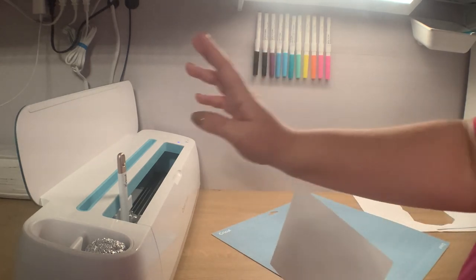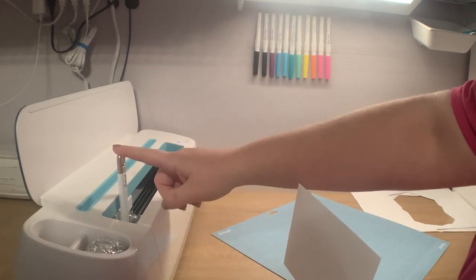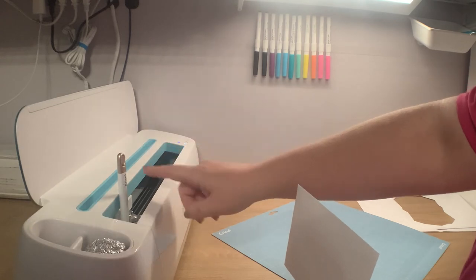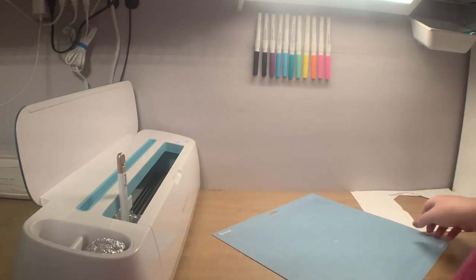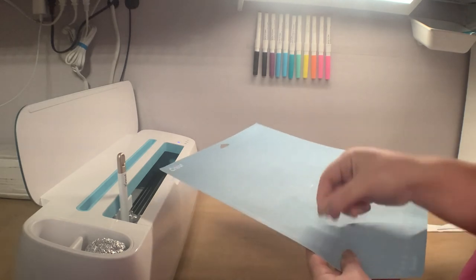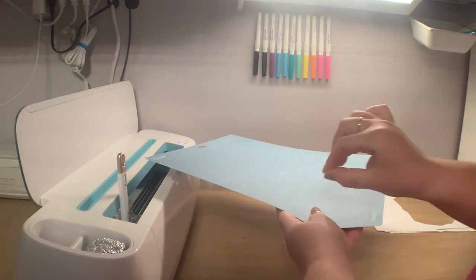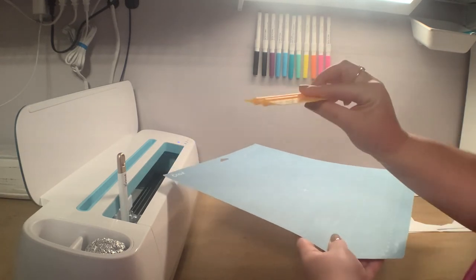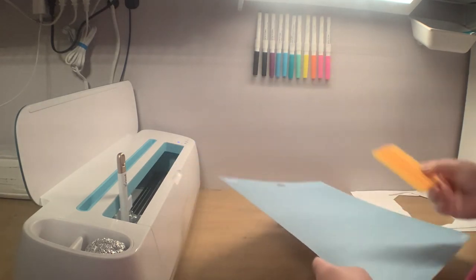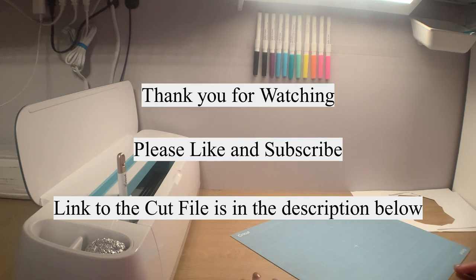And then a quick recap is I use the scoring stylus just to save myself time. I cut lots of these at a time. And you never want to roll it up on itself when you're peeling it off. Instead, you want to pull away from the mat and use a squeegee if necessary. All right, I will share a cut file from Design Space for that. Let me know if you have any questions. Thank you.